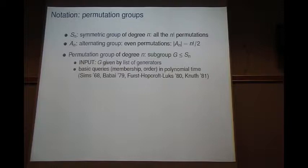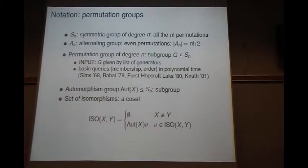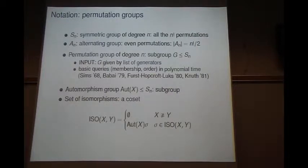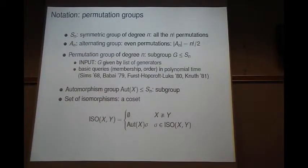Let me set up some notation. S_n is the symmetric group, A_n the alternating group. In computation, permutation groups are given by lists of generators, and we can perform basic tasks in polynomial time, and some non-basic tasks as well. The automorphism group of any structure is a permutation group, and the set of isomorphisms is either empty or a coset of the automorphism group.